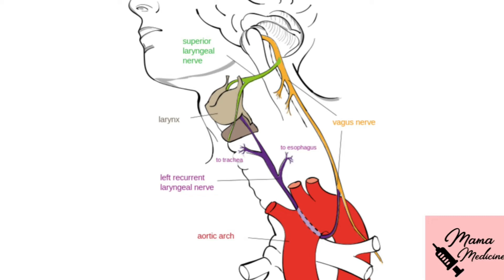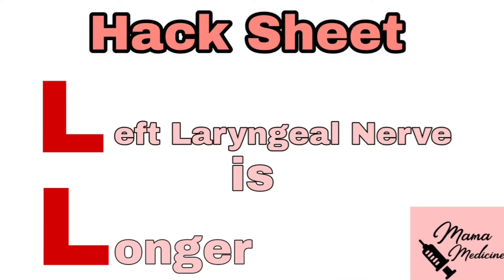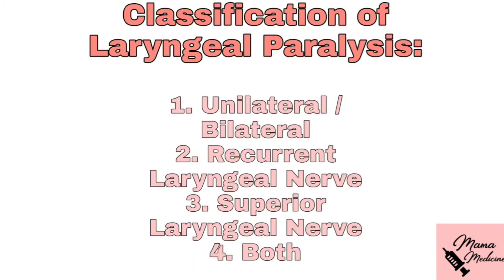Since the left recurrent laryngeal nerve covers a long path in the mediastinum, it is prone to more damage compared to the right recurrent laryngeal nerve. A helpful mnemonic: the left recurrent laryngeal nerve starts with an 'L,' so it is longer than the right. This is the classification of laryngeal paralysis — it can be unilateral or bilateral, involving the recurrent laryngeal nerve, superior laryngeal nerve, or both.